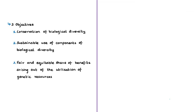India is also a party to this convention and has ratified it in the year 1994. The convention has three main objectives: first, the conservation of biological diversity; second, the sustainable use of components of biological diversity; and third, the fair and equitable sharing of the benefits arising out of the utilization of genetic resources.